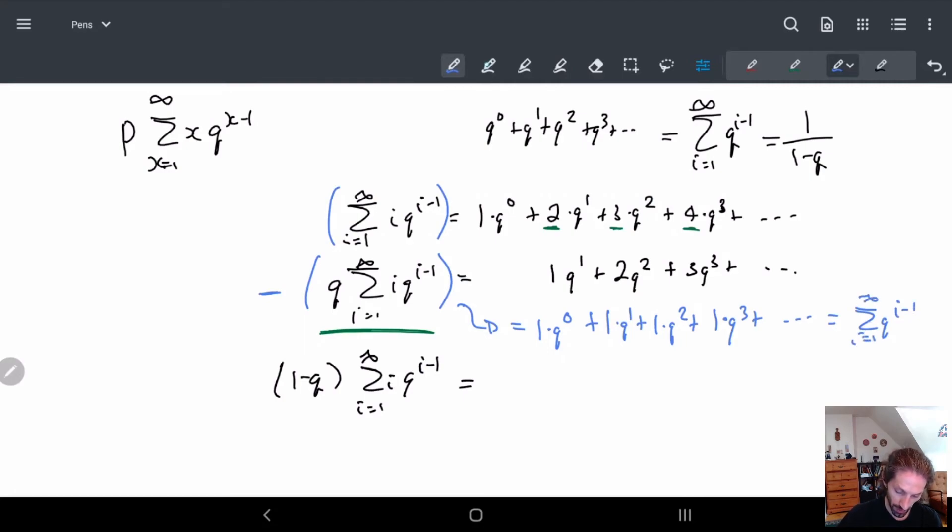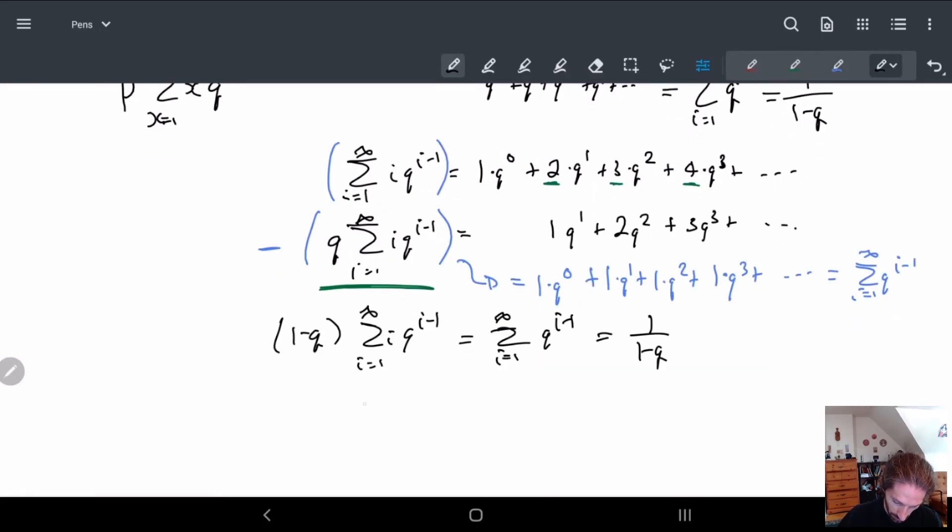And so we know that we end up getting this, which is equal to 1 over 1 minus Q. And in other words what we end up getting, this implies that sum i equals 1 to infinity of i Q to the i minus 1 is equal to 1 over (1 minus Q) squared.